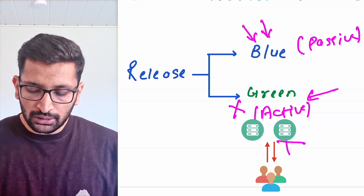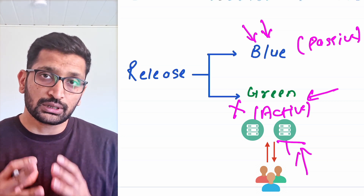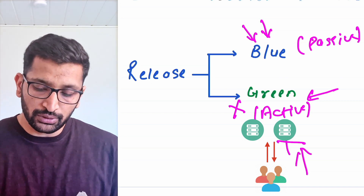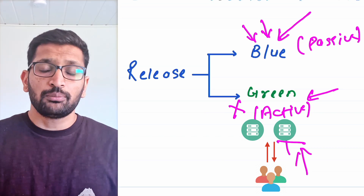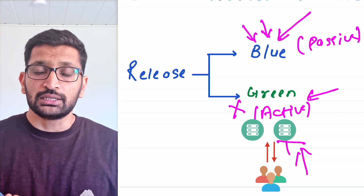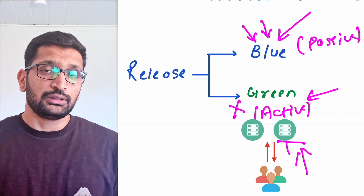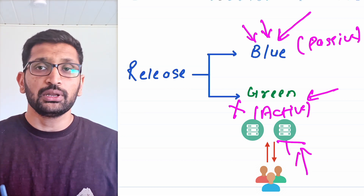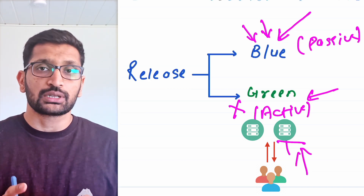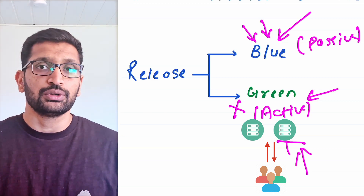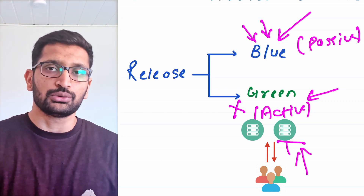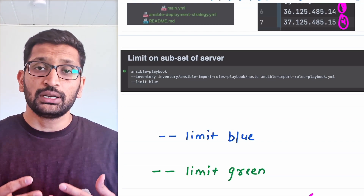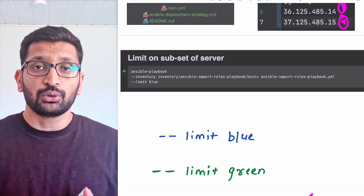You cut all traffic coming towards the green servers and redirect it towards the blue category. The benefit of this deployment strategy with Ansible is that you don't have to put downtime on your production server — your applications are always available and you just need to switch traffic from the green to the blue server. Now, how do you implement this using the Ansible playbook command?